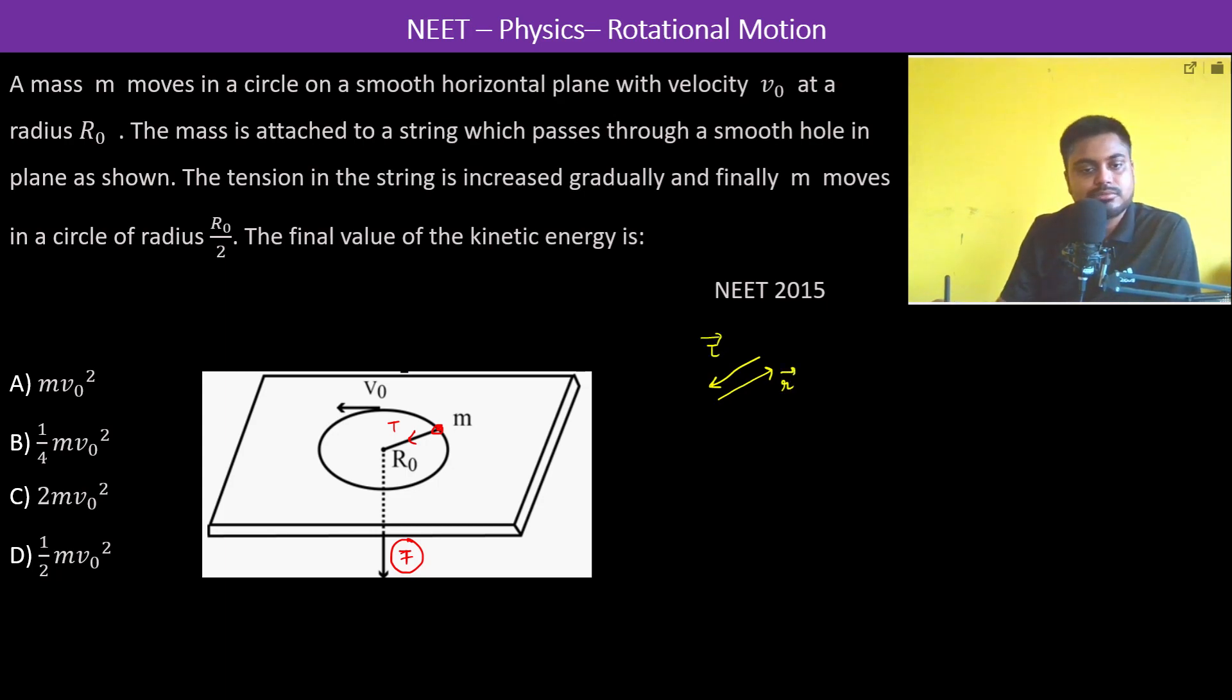Therefore, not torque sorry, force. Force is in this direction and R vector is in this direction. Therefore R cross F, which is the torque, is going to be zero because it's going to be 180 degrees.